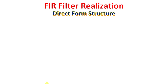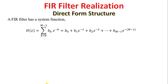First, some basic information about the FIR filter. The FIR filter has a system function H(z) equals the sum from k equals 0 to M minus 1 of b(k) times z to the power minus k, which equals b0 plus b1 z to the power minus 1 plus b2 z to the power minus 2 and so on. Notice there is only a numerator and no denominator — it means the FIR filter is an all-zeros filter because there is no pole.